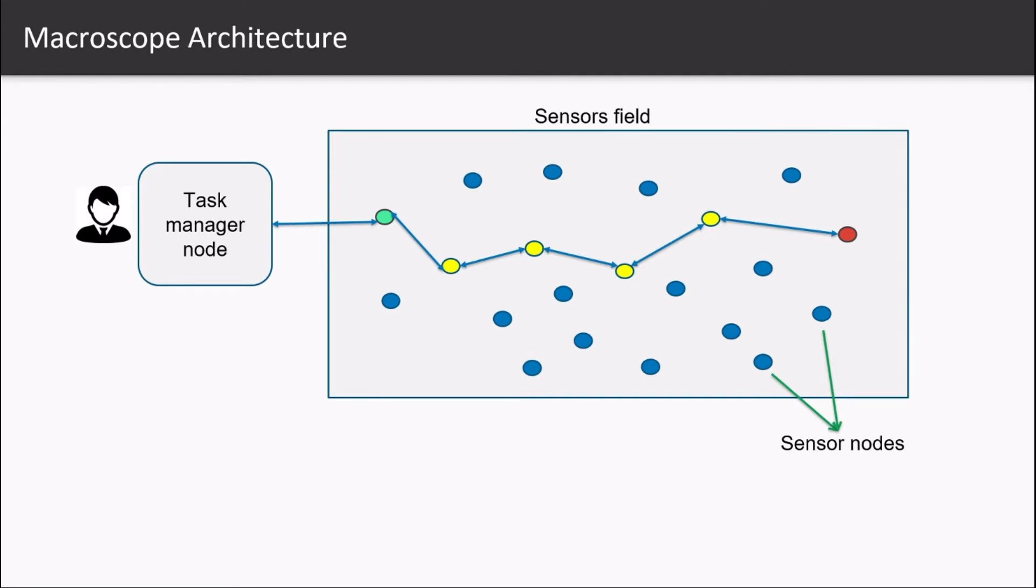So this network as a whole is known as macroscope architecture which allows us for the first time to observe the world, environment, building, people or any other kind of network at a very high specular resolution. Make these observations continuously in real time and collect the observation in digital form.